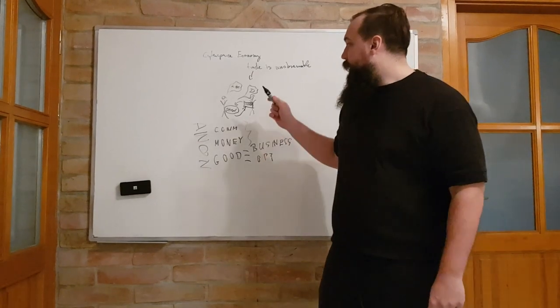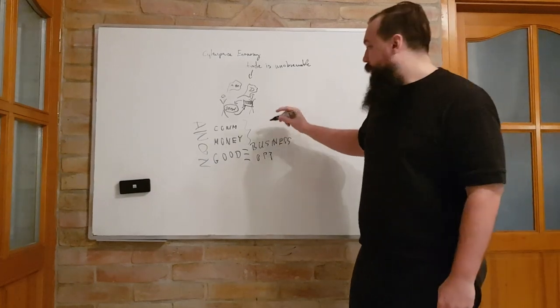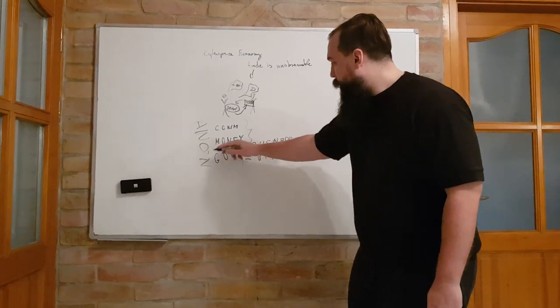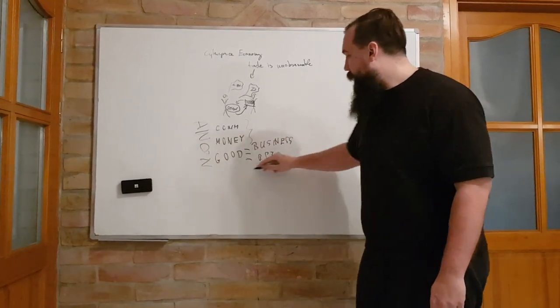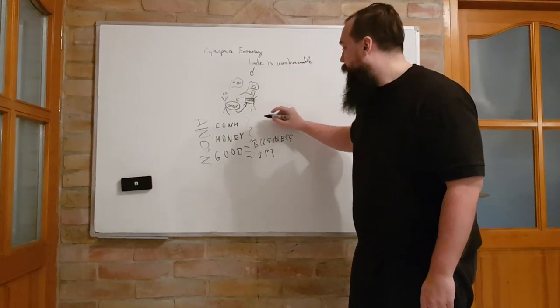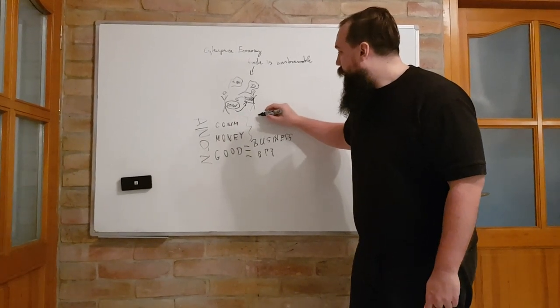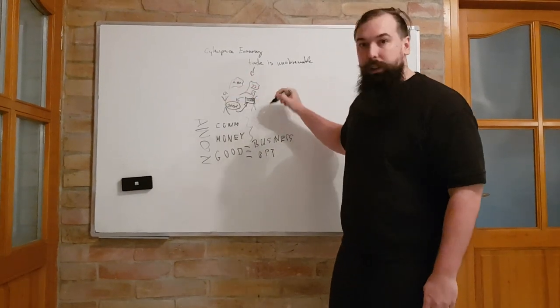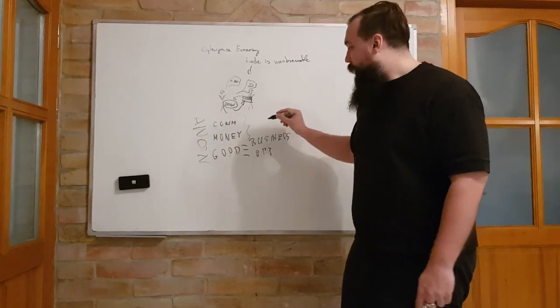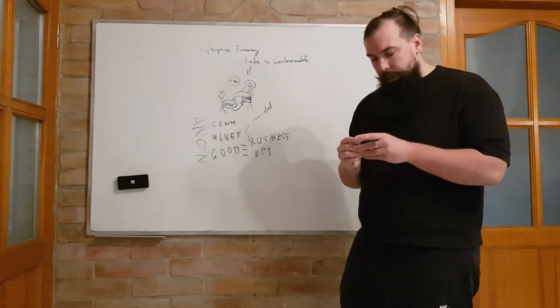We want the money to be as good as any other money and to be unobservable. That's when we can get to the cypherpunk economy. Since communication and money are a constant part of every single trade, these primitives should be already provided in a library, for example.